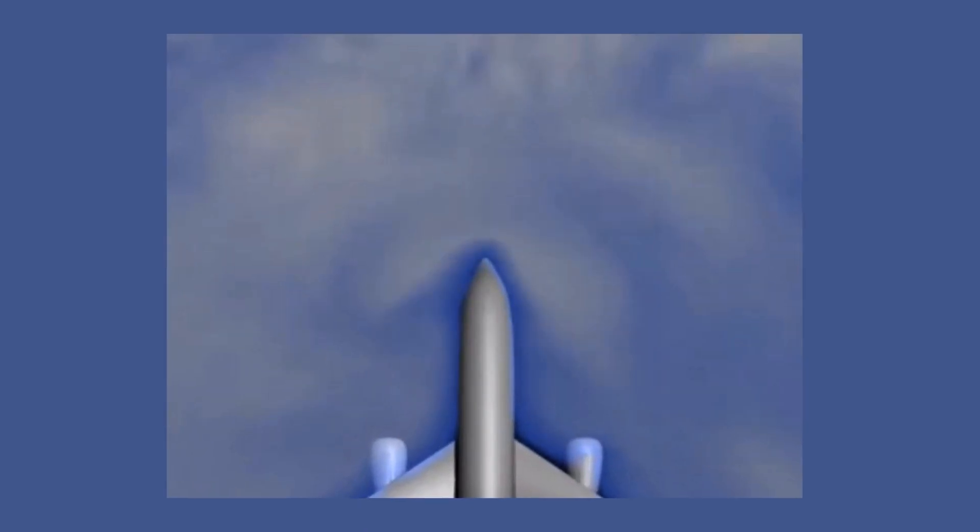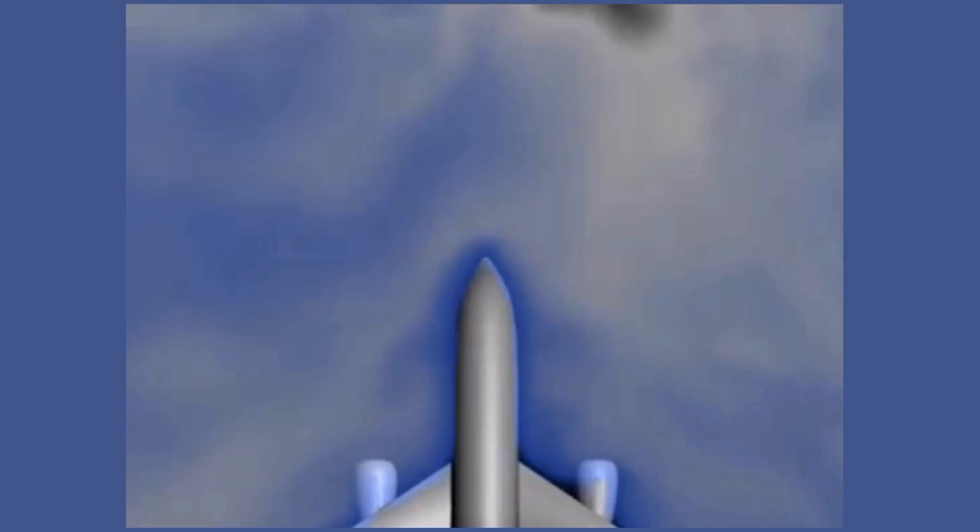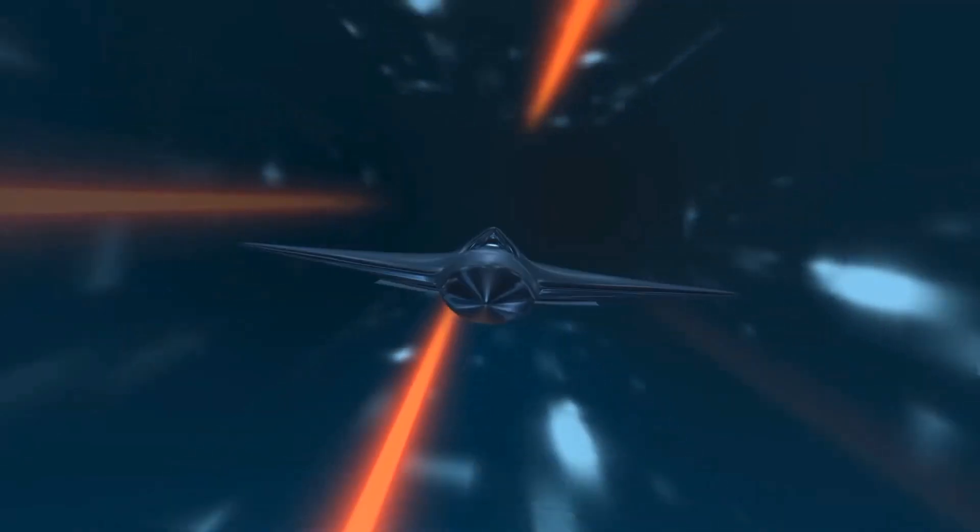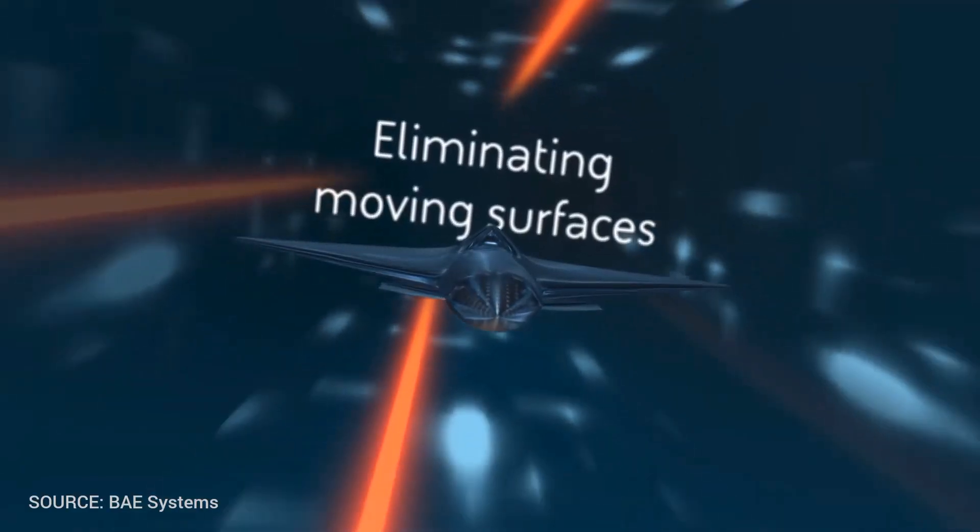In this way, if forebody blowing is activated only on one side, it creates asymmetry in the forebody vortices, causing a side force and yawing movement to act on the front of the aircraft and can be used to maneuver it.